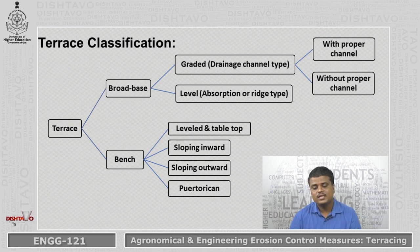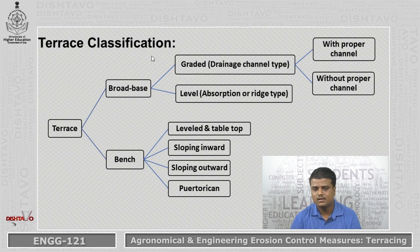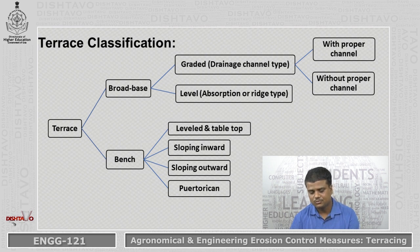Next is terrace classification. As we discussed, terraces have two types: broad-based and bench terraces. Broad-based terraces are divided into two types: graded and level terraces. Graded terraces also have two subtypes: with proper channel and without proper channel. Bench terraces are classified into four types: leveled (also called table-top terrace), sloping inward, sloping outward, and field-front terraces. This is the detailed classification of terraces.